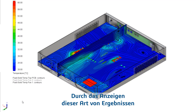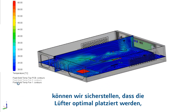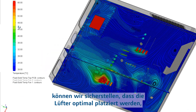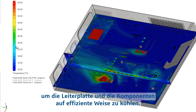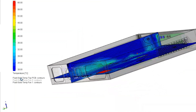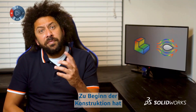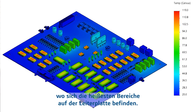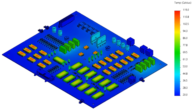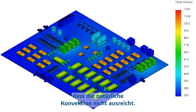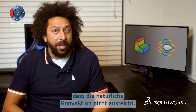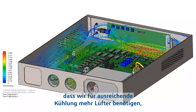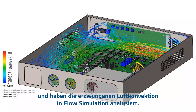Being able to view these types of results allows us to ensure that the fans are located at their optimal location to efficiently cool the PCB and components. At the beginning of the design, SOLIDWORKS Simulation helped us understand the hottest locations on the PCB. It also highlighted the fact that natural convection is inadequate.